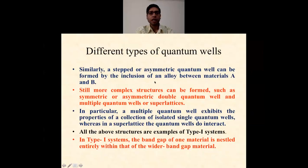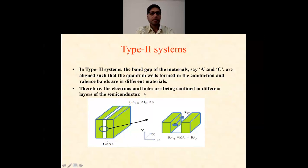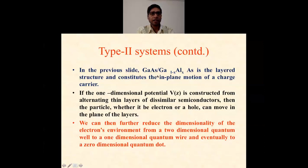A stepped or asymmetric quantum well can be formed by the inclusion of an alloy between A and B. Still more complex structures can be formed, such as symmetric or asymmetric double quantum wells. In particular, multiple quantum wells exhibit the properties of a collection of isolated single quantum wells, whereas in superlattices the quantum wells also interact. All the above structures are examples of Type I systems. In Type I systems, the band gap of one material is nested entirely within that of the wider band gap material, as I described with wider band gap material B and narrower band gap material A. Type II systems: the band gaps of the materials, say A and C, are aligned such that quantum wells formed in the conduction and valence bands are in different materials. Therefore, the electrons and holes are being confined in different layers of the semiconductors. Here you can see the Type II system.